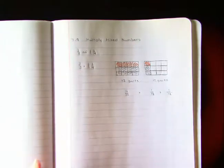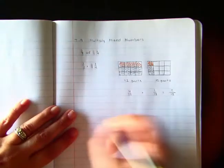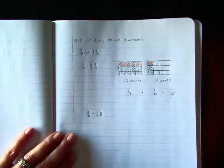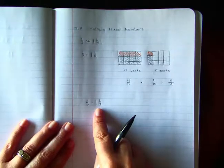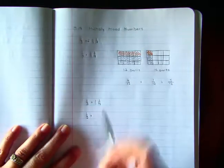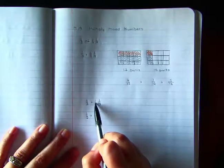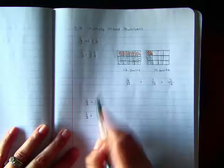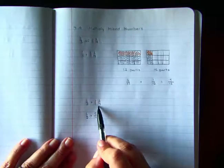So that's one way to do it, showing it on a model. A second way to do it is by using a fraction that's greater than one. So I have the same problem, one-third times one and one-fourth. I can turn this one and one-fourth into a fraction that is greater than one, and that way I'll just be able to multiply straight across. So I'm going to bring down my one-third because that one's going to stay the same. I'm going to turn this into a fraction greater than one, so I'm going to multiply my denominator by my whole number, and I'm going to add my numerator. So four times one is four, plus one is five. So I have five-fourths. Five-fourths is equal to one and one-fourth.